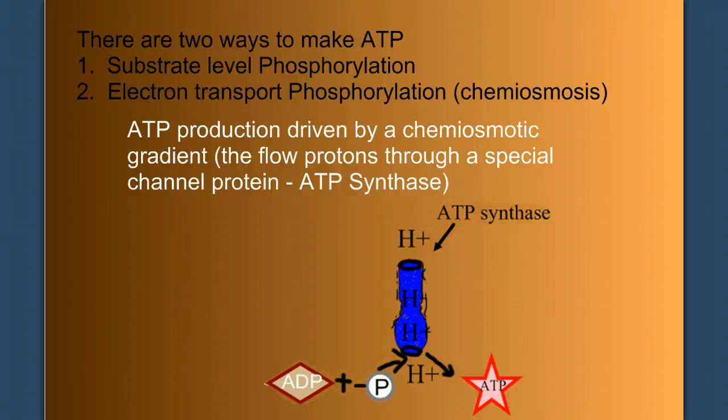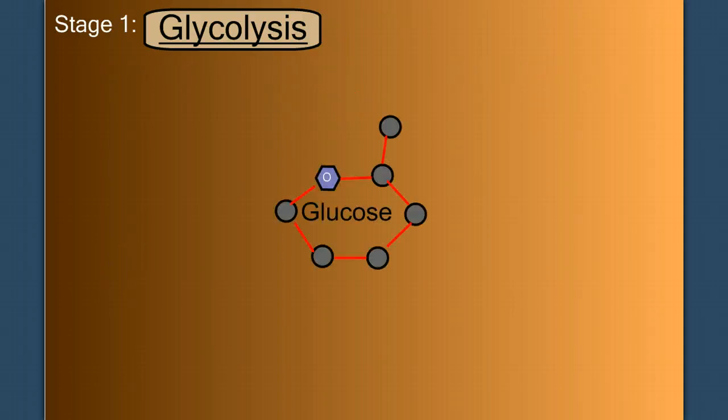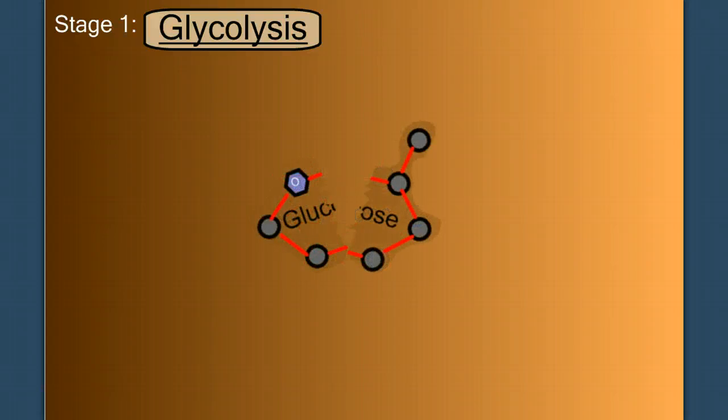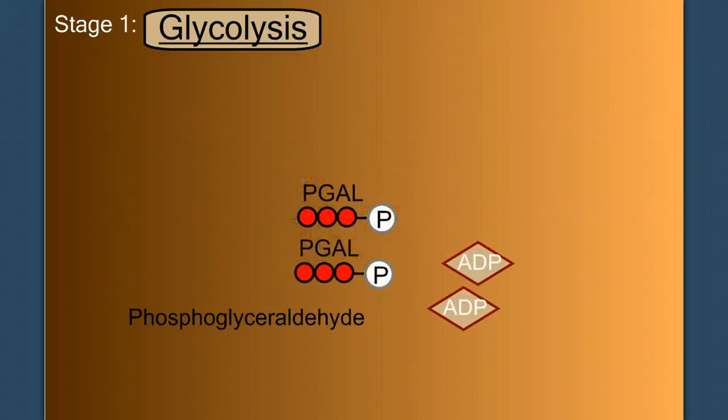So let's get started with glycolysis. Remember that glycolysis is anaerobic and it occurs in the cytoplasm. And we're going to start with glucose. And in the first step of glycolysis, glucose is split with the energy from ATP. And this is interesting because we're trying to make ATP, but in the first step, we actually consume two ATP to split glucose into two molecules called PGAL, or phosphoglyceraldehyde.